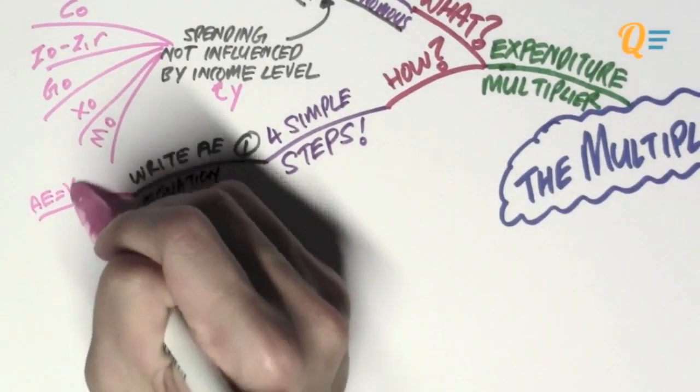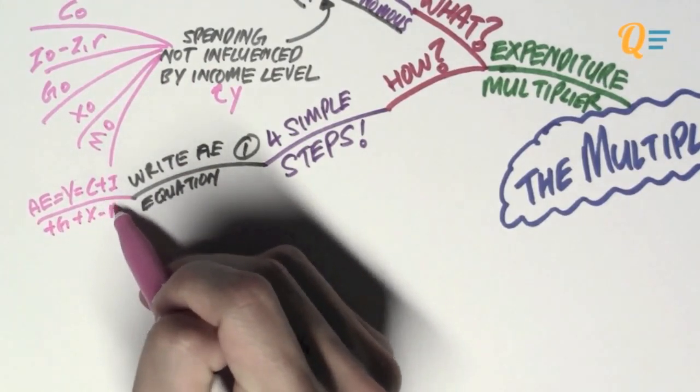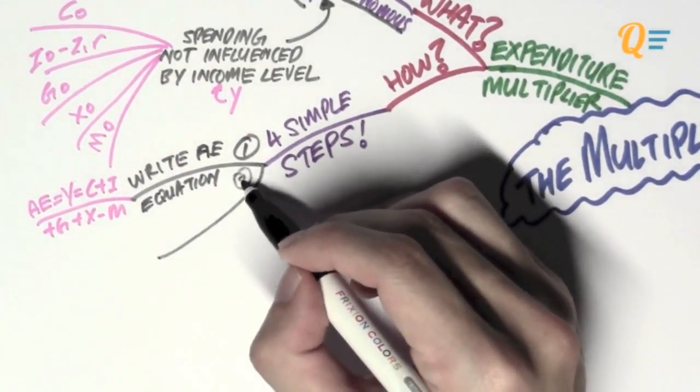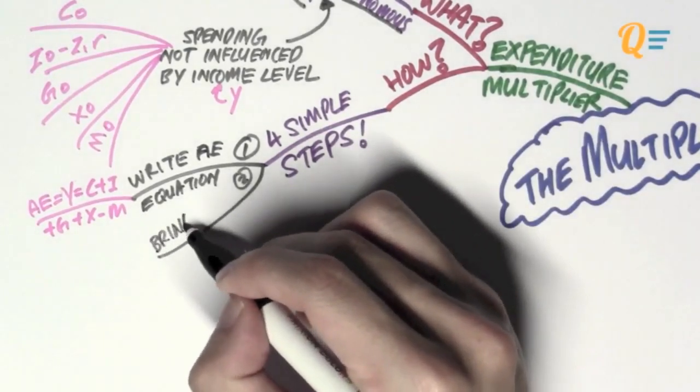So, at equilibrium, AE equals to Y, which is also equal to C plus I plus G plus X minus M. So, we expand those according to the assumptions that we're going to make about the economy.